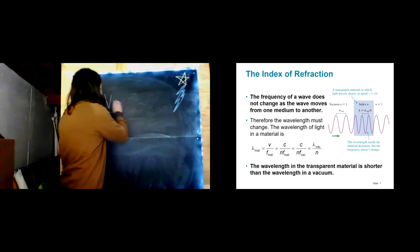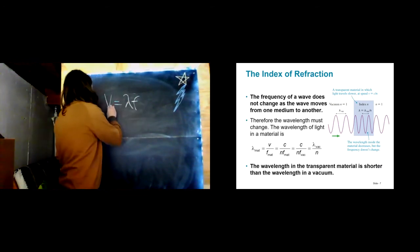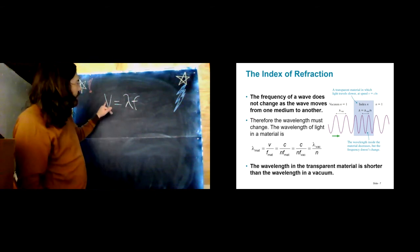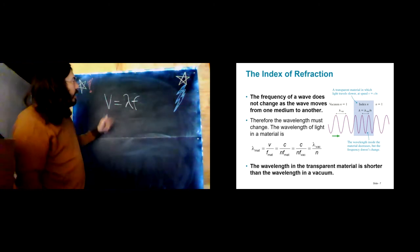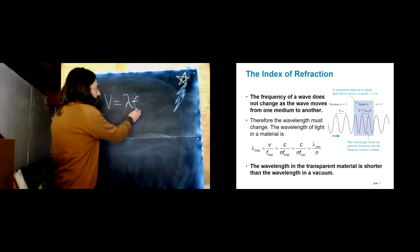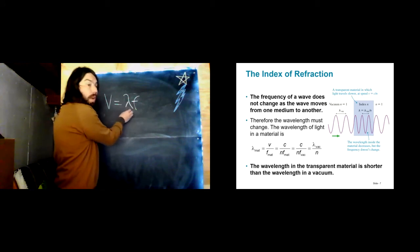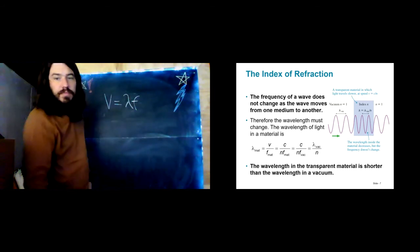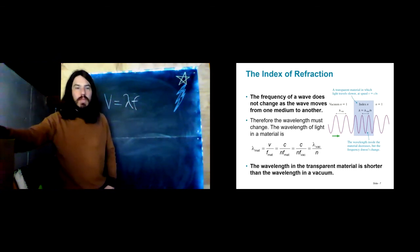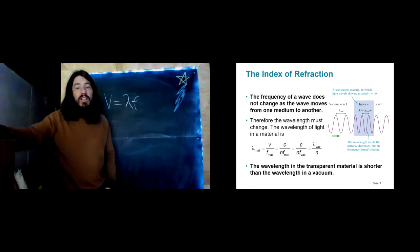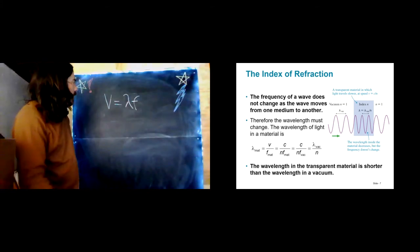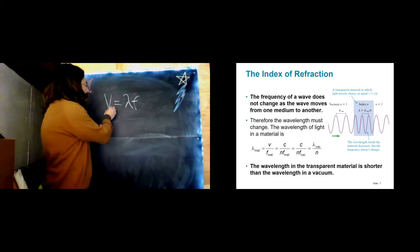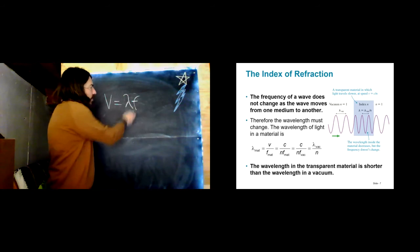Remember our big money wave equation: V equals lambda times F. This velocity equals wavelength times frequency. If the frequency stays the same as the velocity changes, the wavelength has to change. In general, the wavelength in a transparent material is shorter than the wavelength in a vacuum, because as velocity decreases, the wavelength decreases.